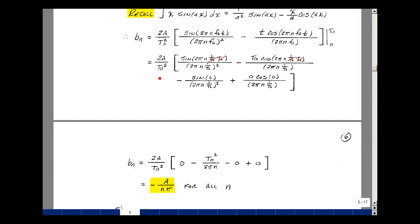b sub n is equal to 2a over t0 squared. The sine of 2 pi n, say n equals 1, would be the sine of 360 degrees, which is equal to 0. And then for n equals 2, that would be 720, and so on. So that's going to be equal to 0.